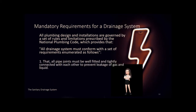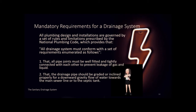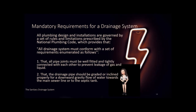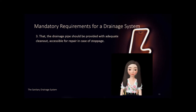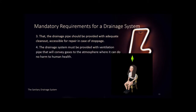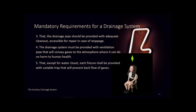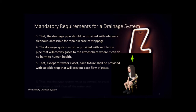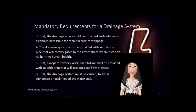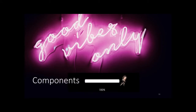The drainage pipe should be graded or inclined properly for downward gravity flow toward the main sewer line or septic tank. It should be provided with adequate cleanouts accessible for repair in case of stoppage. The drainage system must be provided with ventilation pipe to convey gases to the atmosphere. Each fixture, except water closets, shall be provided with a suitable trap to prevent backflow of gases, and the drainage system must be vented to avoid siphonage or backflow of the water seal.